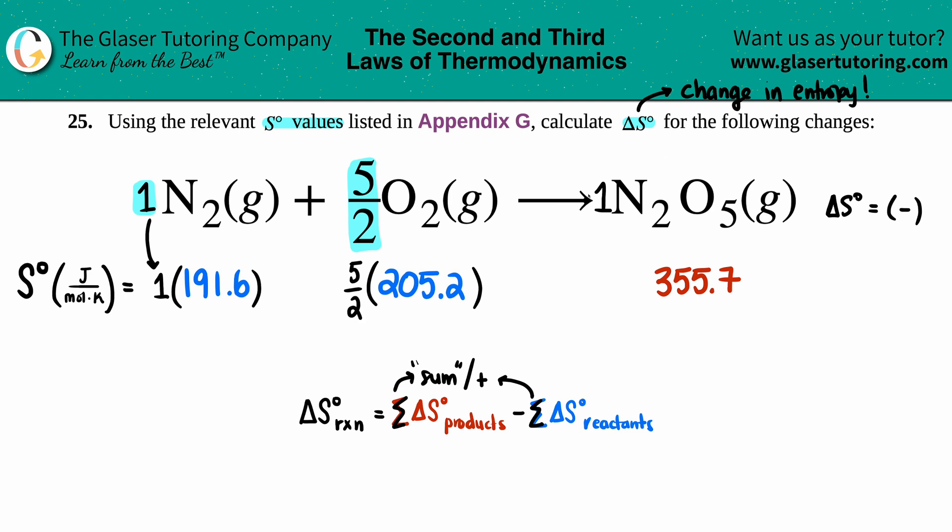Since I have one N2O5, I just take this value and times it by one—it's the same number. Just being thorough here.